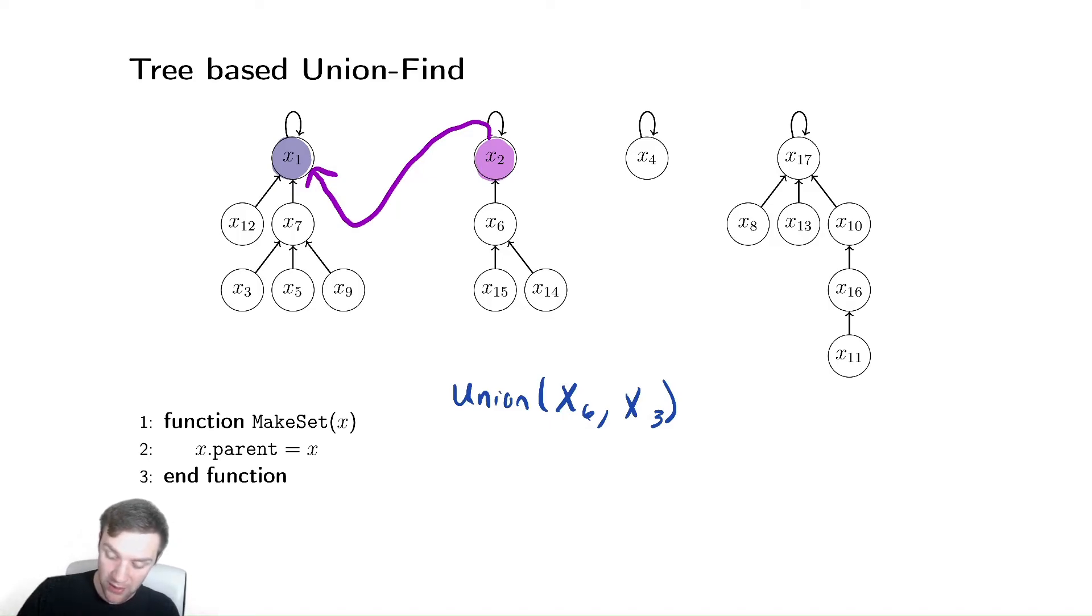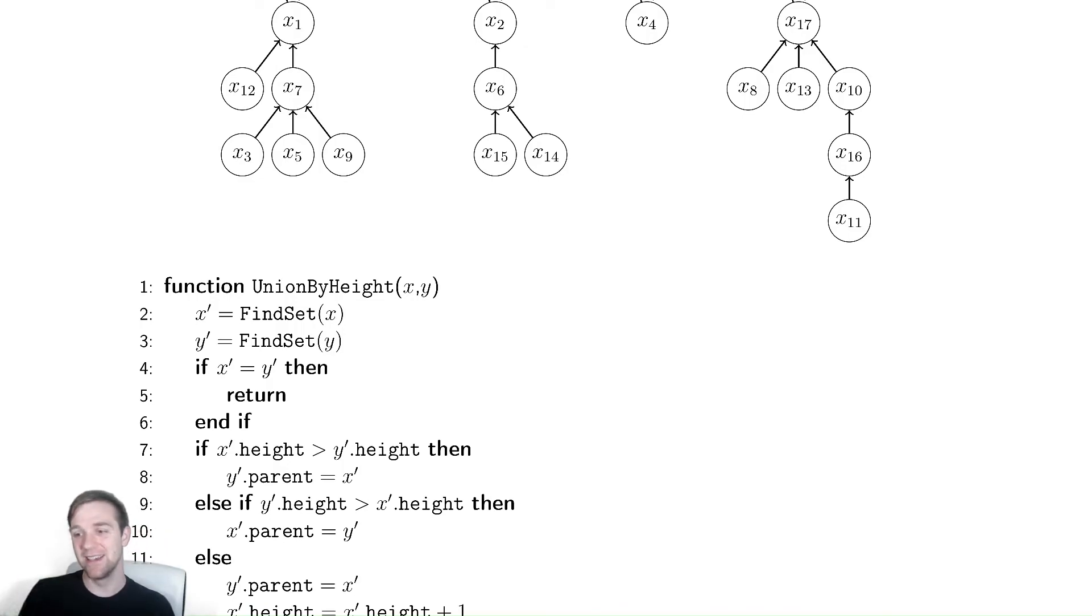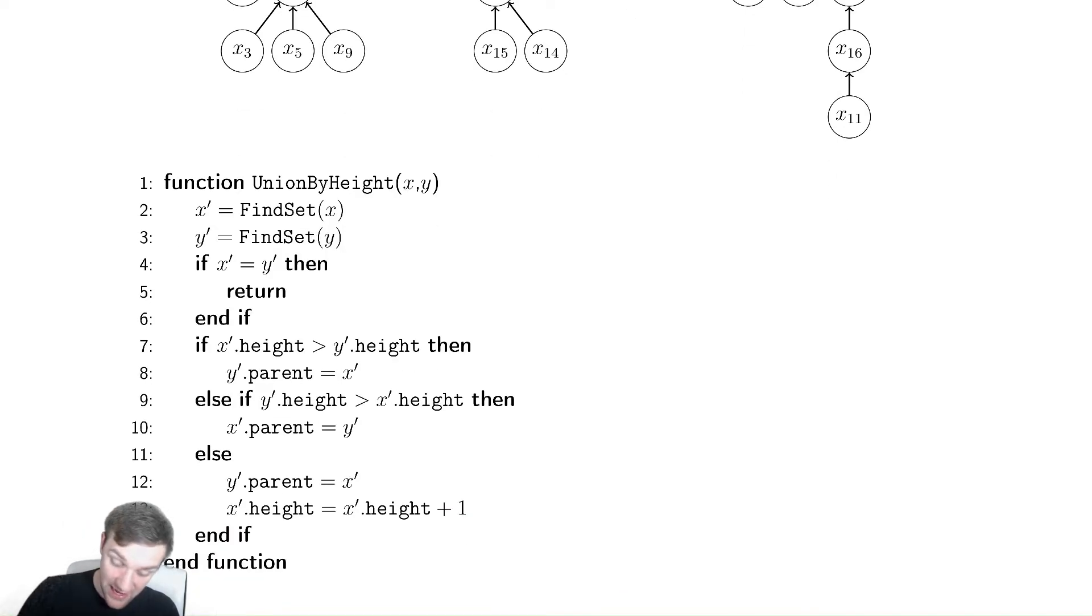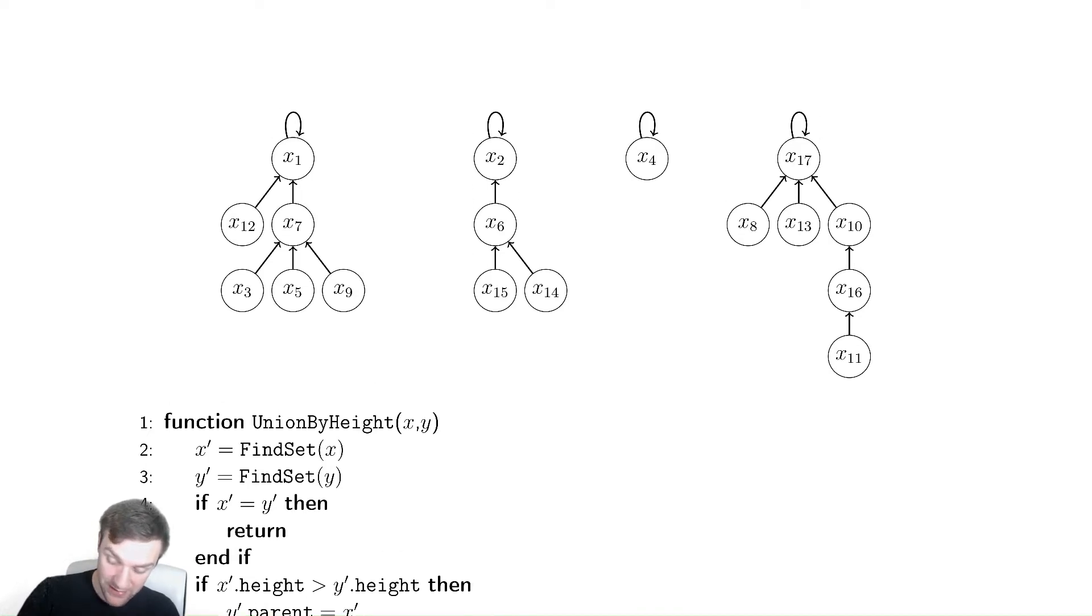So, what we're going to do, let's look at the code for this, we're going to union by height. If X' dot height is greater than Y' dot height, then we can make the parent of Y be X' prime. So, in that case, the height of this tree, for example, is 2, and the height of this tree is 3.